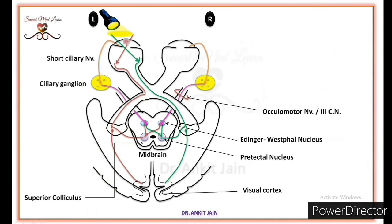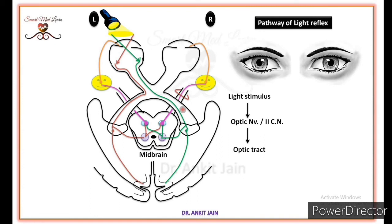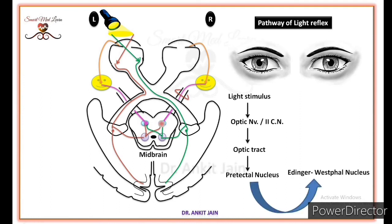Now the question arises: why do both eyes' pupils constrict when light is flashed in one eye? When we flash light in one eye, the light stimulus travels through the optic nerve and via the optic chiasma reaches the optic tract on both sides. From the optic tract, the light impulse reaches the Edinger-Westphal nucleus via the pre-tectal nucleus on both sides.